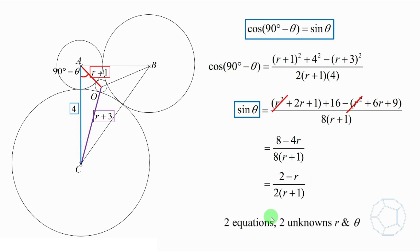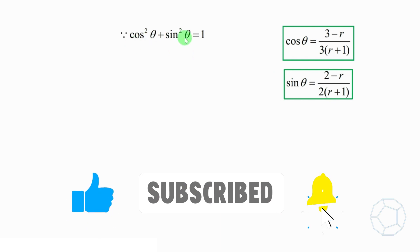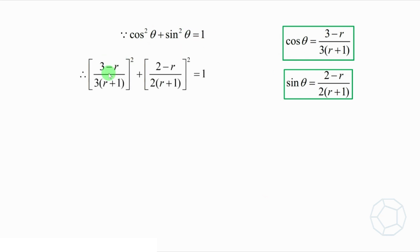With two equations and two unknowns R and theta, we are ready to solve for R. Remember the square identity, cosine square theta plus sine square theta equals to 1? Great! We put the two expressions into the equation. Therefore, 3 minus R over 3 times R plus 1 whole square, plus 2 minus R over 2 times R plus 1 whole square is equal to 1. Put the square inside each term in the brackets, then it's changed to the following.